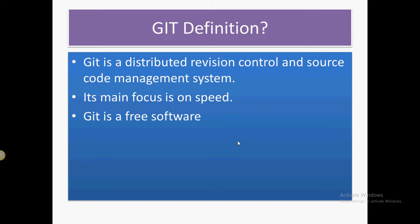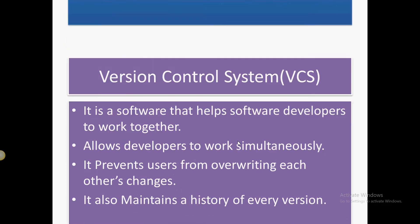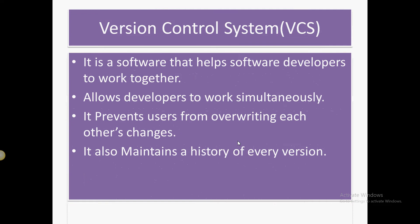The second thing is it's a source management system — your source code is managed and you can have different versions of the source code in Git. Its main focus is on speed, and it is also free software. Now we will discuss what is a version control system.